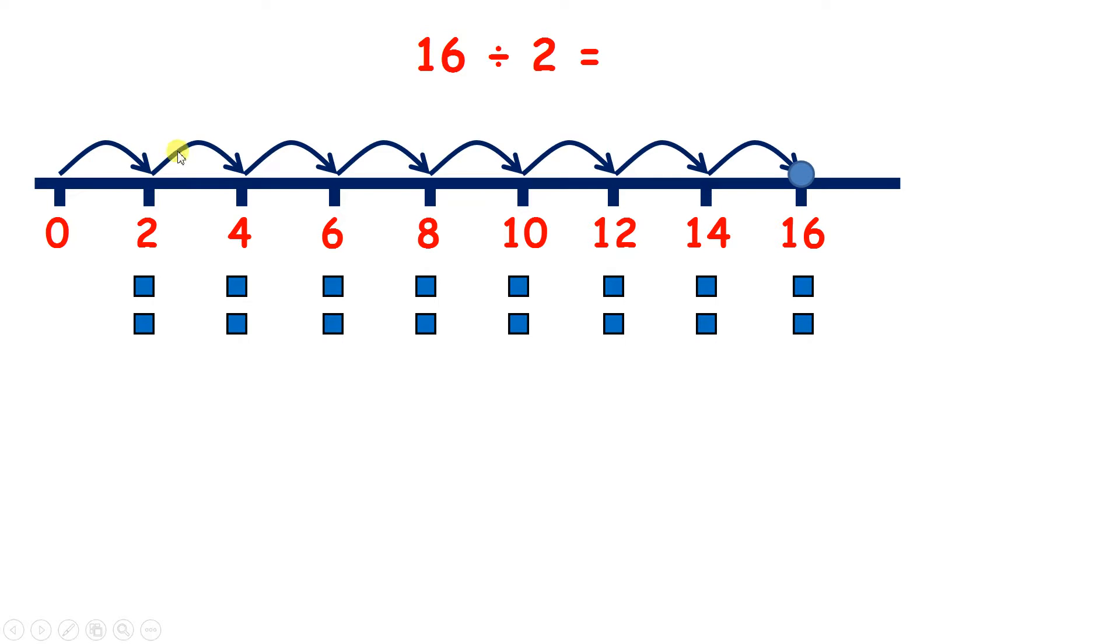So here, we've made 1, 2, 3, 4, 5, 6, 7, 8 jumps. So we have 8 groups of 2. So 16 divided by 2 is 8.